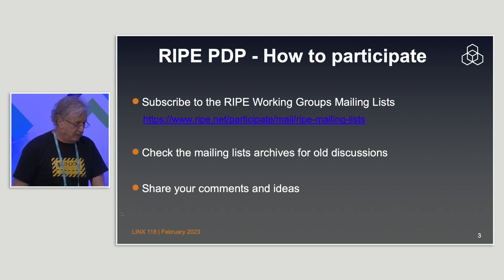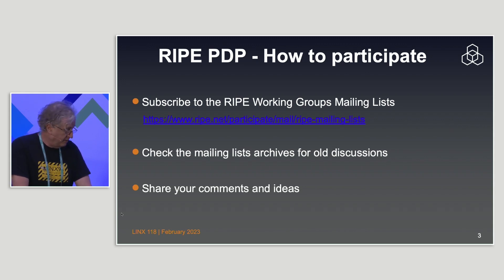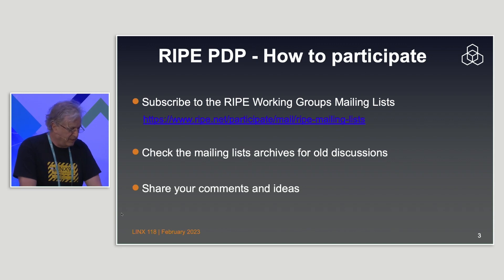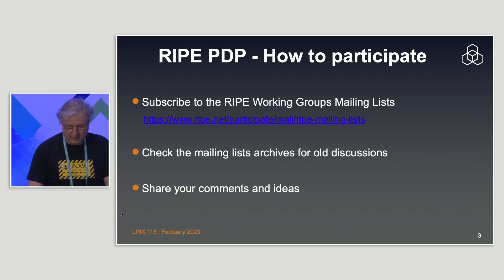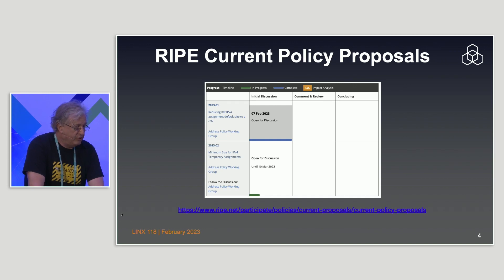RIPE policy is mostly made on mailing lists, so the best way to find out what's happening is to subscribe to the mailing lists. There's a link — you can check old discussions in the archives and share your comments and ideas if that sort of thing interests you.